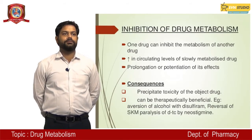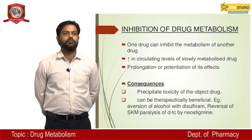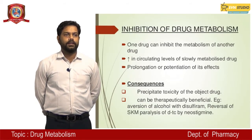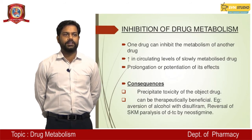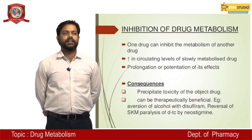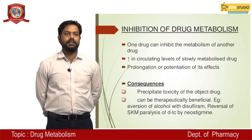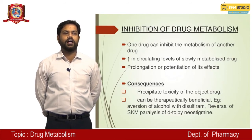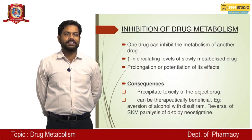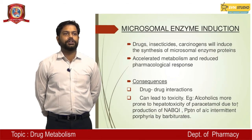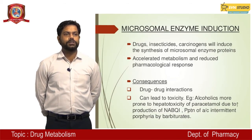Inhibition of drug metabolism: one drug can inhibit the metabolism of another, leading to increased circulating levels of the slowly metabolized drug, prolongation or potentiation of its effect. Consequences include precipitating toxicity, but it can also be therapeutically beneficial — example: aversion of alcohol with disulfiram, reversible skeletal muscle paralysis.